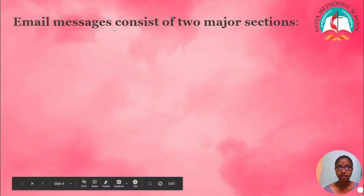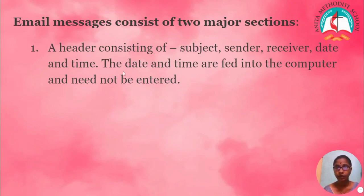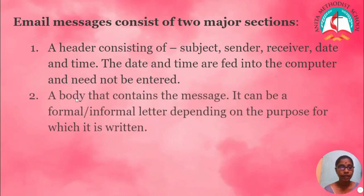Email messages consist of two major sections. The first is a header consisting of subject, sender, receiver, date and time. The date and time are set by the computer and need not be entered. The second is a body that contains the message — it can be a formal or informal letter depending on the purpose for which it is written.